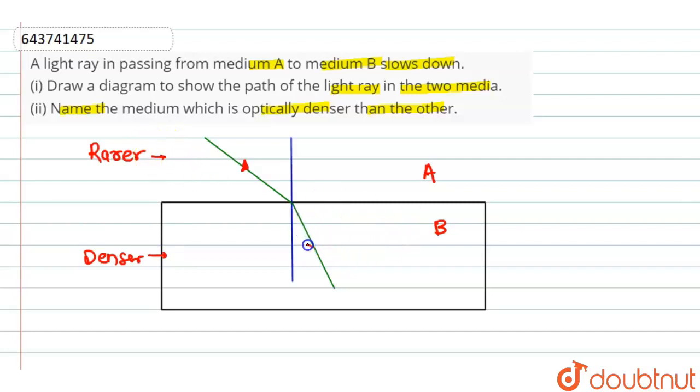Therefore, the refracted ray here slightly bends towards the normal, which is indicated by MN in the figure.